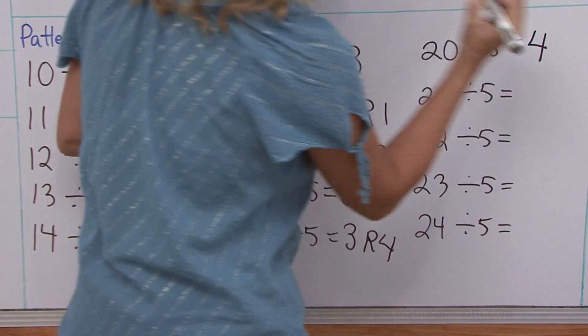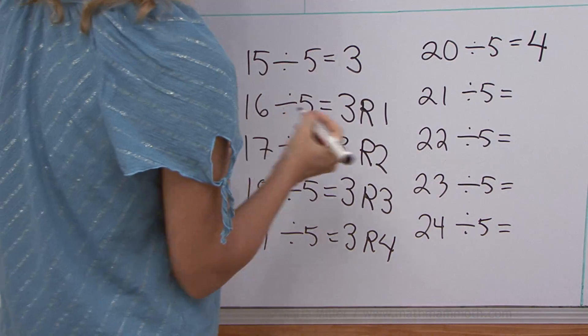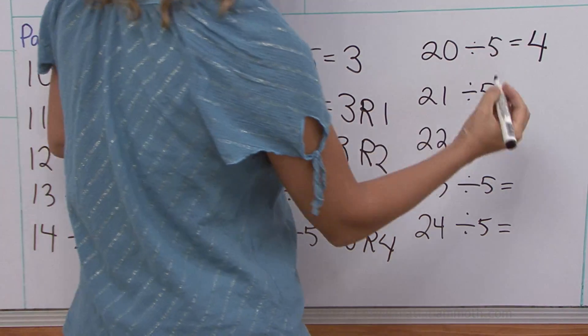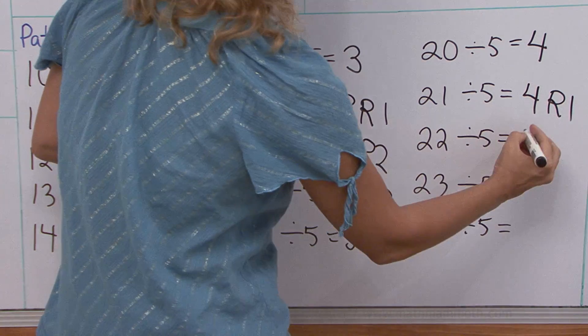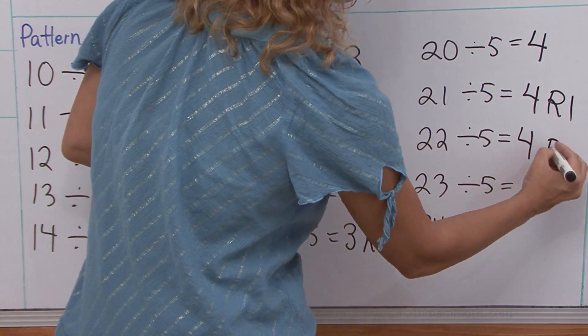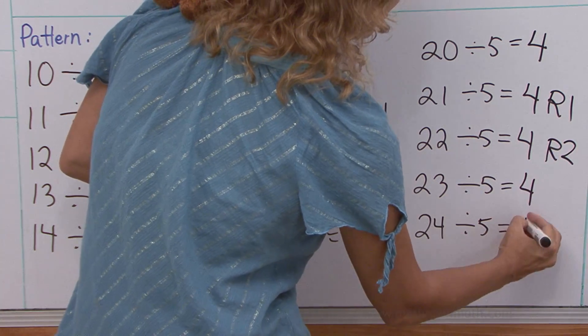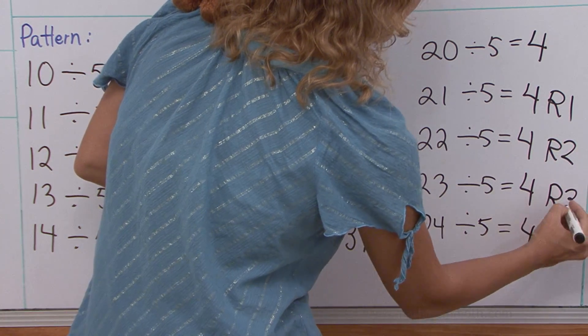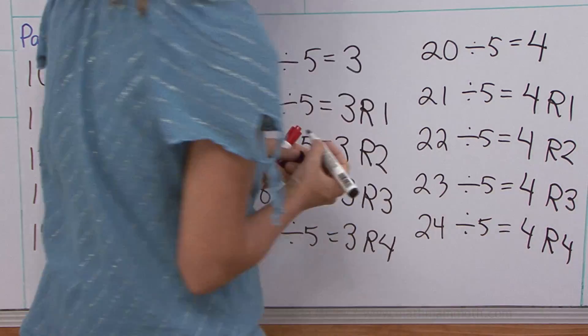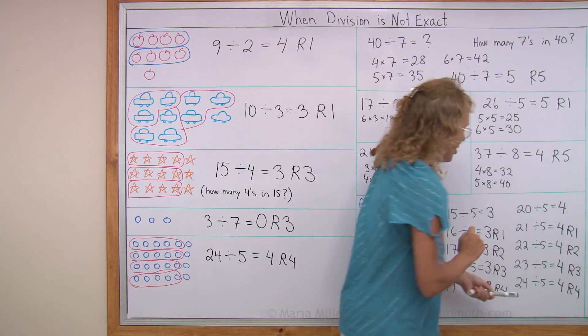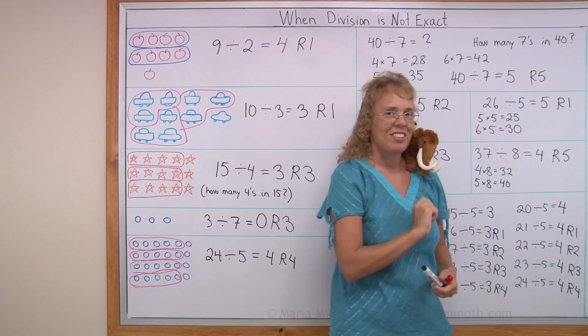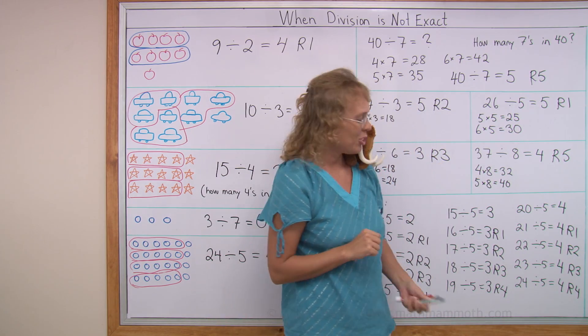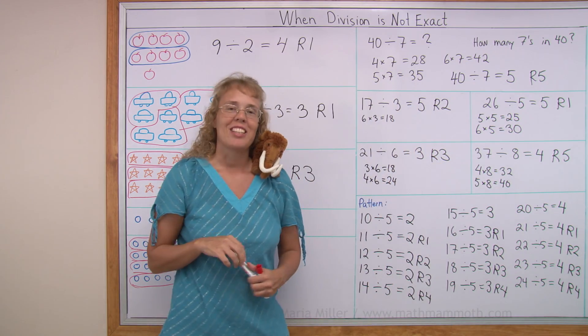And then twenty divided by five. It's an even division again. No remainder. And how many fives in twenty-one? Four, and remainder one. You can guess how it goes now, right? Fours here, and the remainder increases by one in each step. Until we come to twenty-five divided by five, which would be five, an even division. I hope you enjoyed the pattern. We're all done with this lesson.